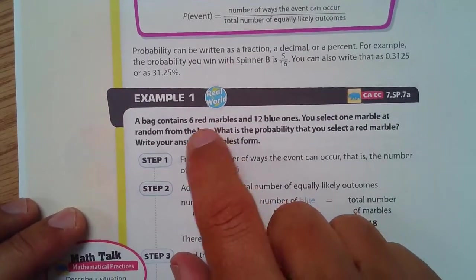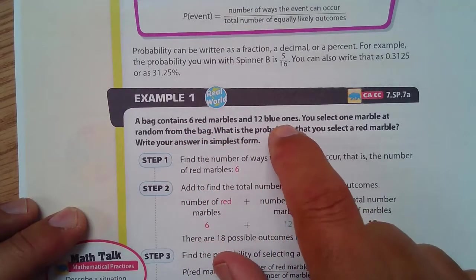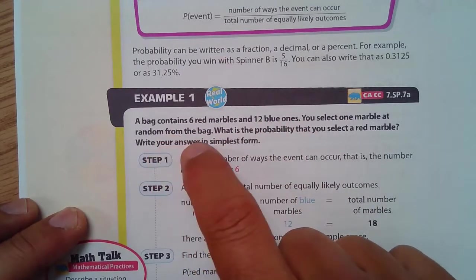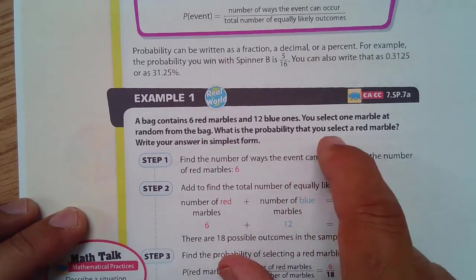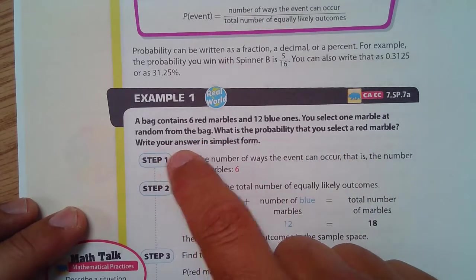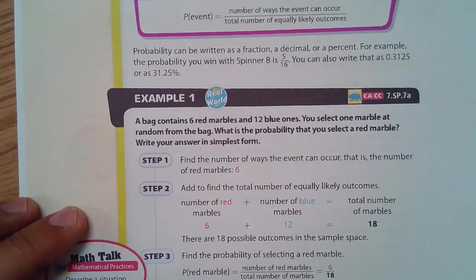Example 1. A bag contains 6 red marbles and 12 blue ones. You select one marble at random from the bag. What is the probability that you select a red marble? And write your answer in simplest form.